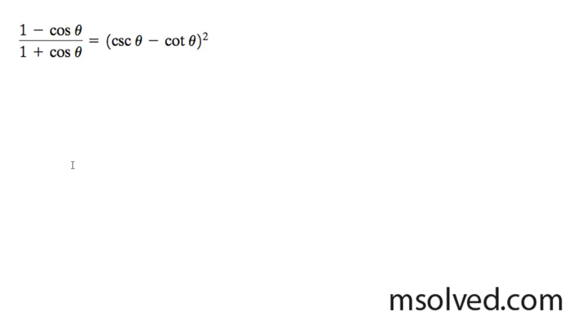We're going to prove the following trig identity. Starting with the left side: 1 minus cosine theta over 1 plus cosine theta.